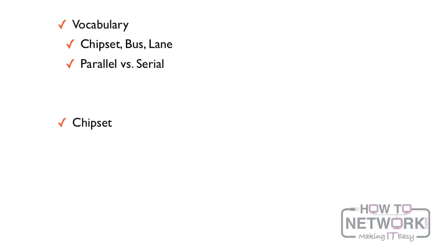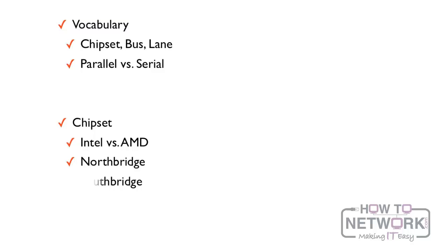Once we do that, we're going to talk about chipsets in particular. Specifically, there are two manufacturers who make chipsets, and there are two main chips that have been developed in these chipsets: the North Bridge and the South Bridge. These are really important and will come up on the A+ exam.